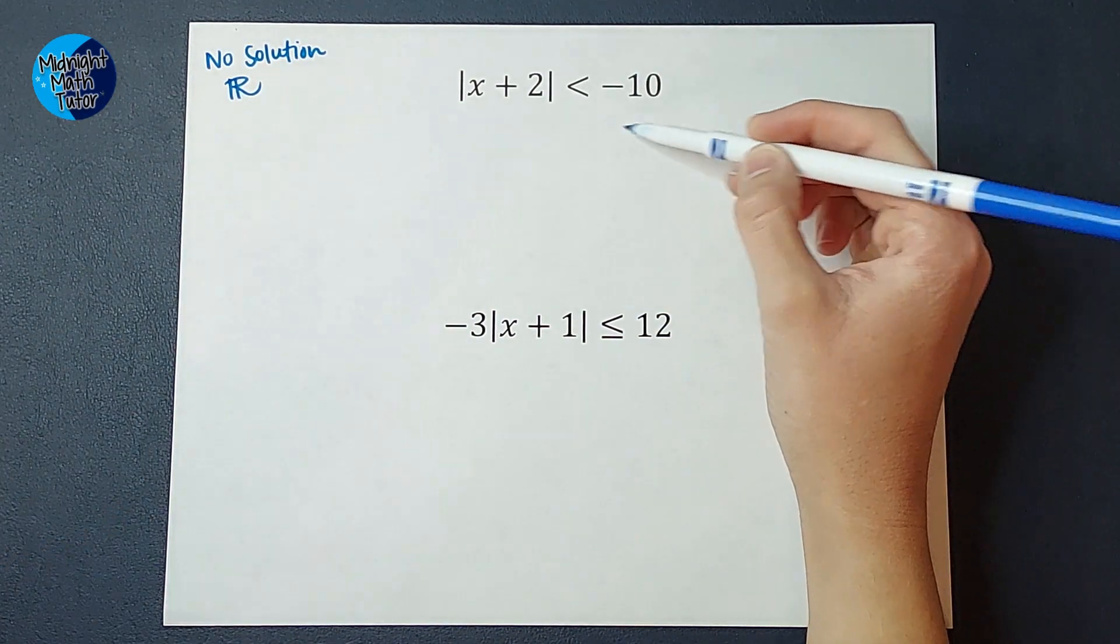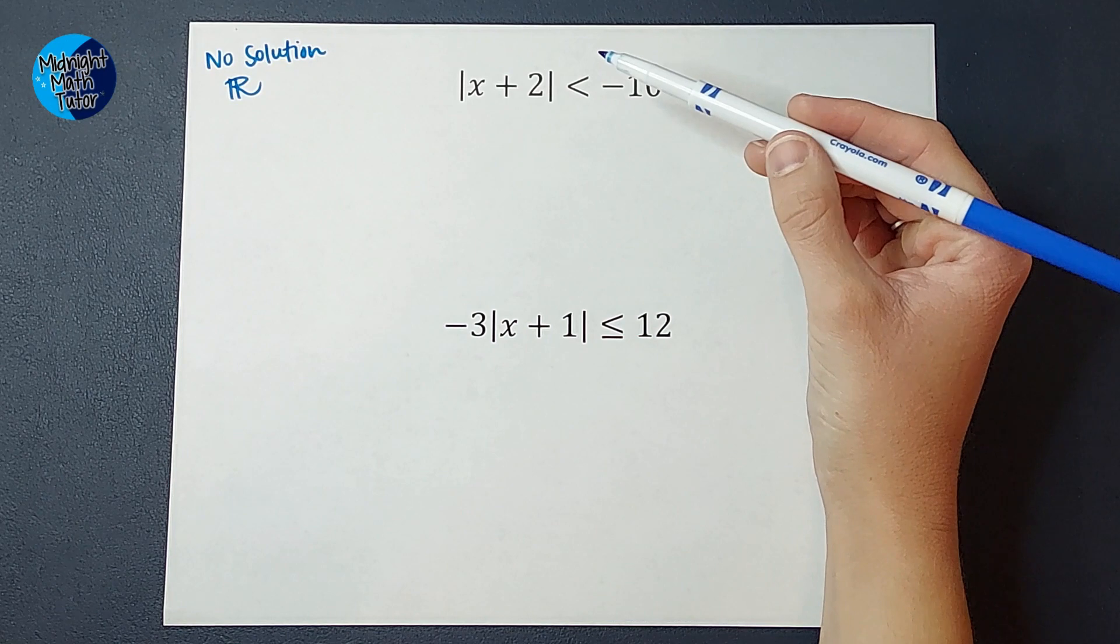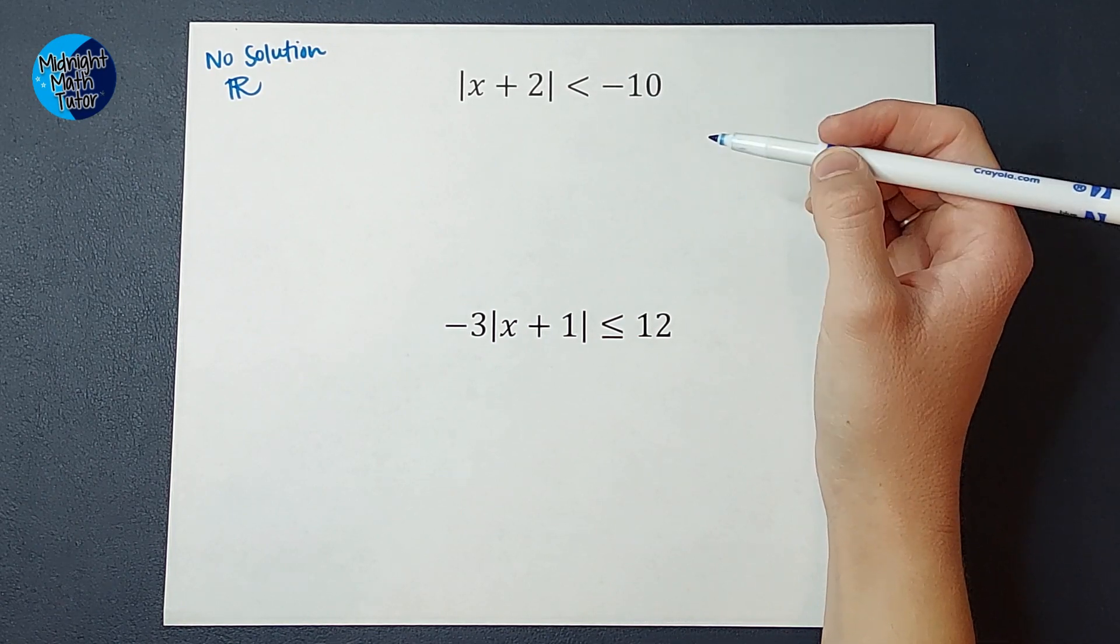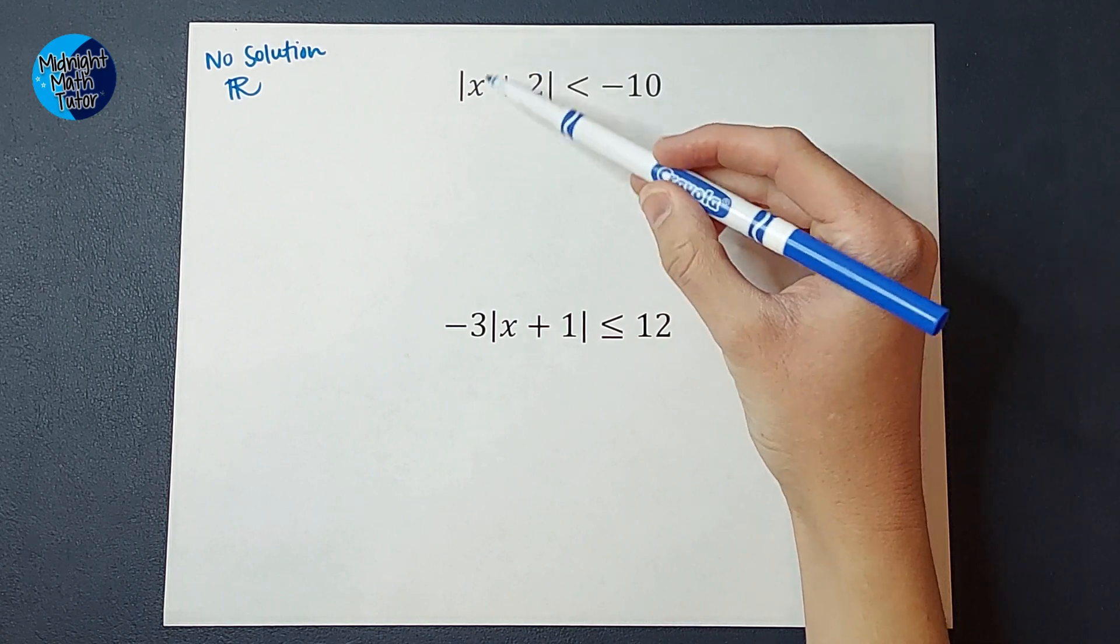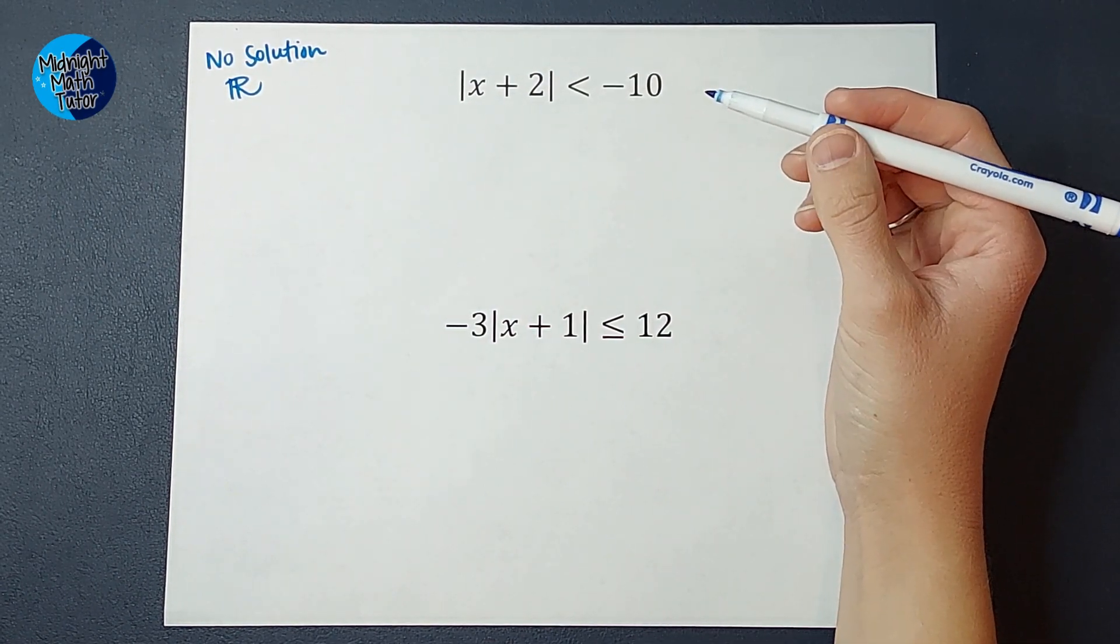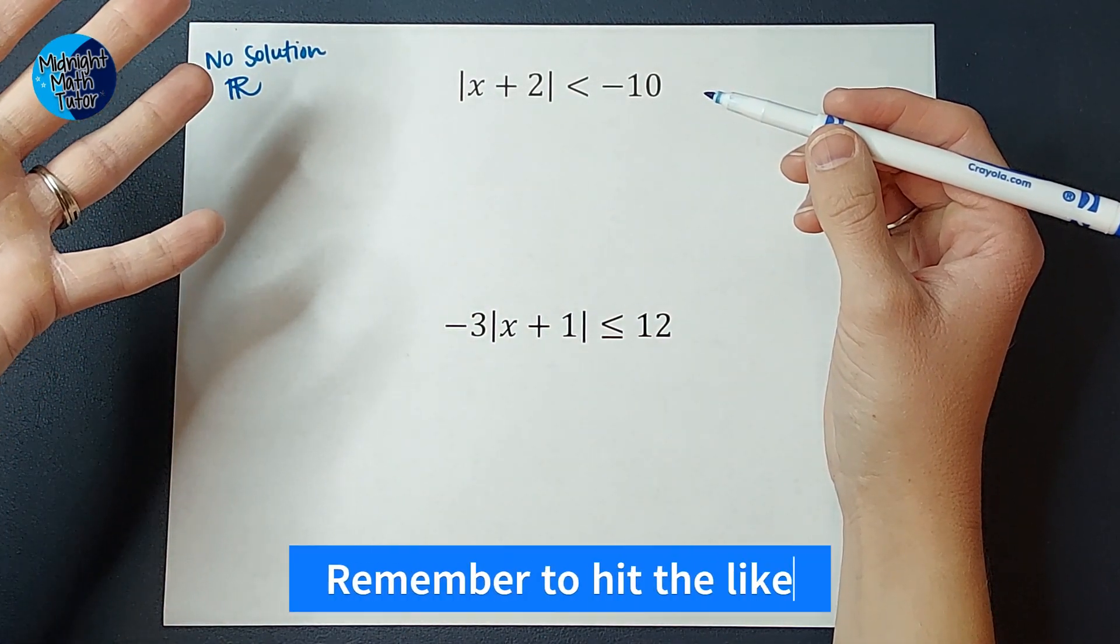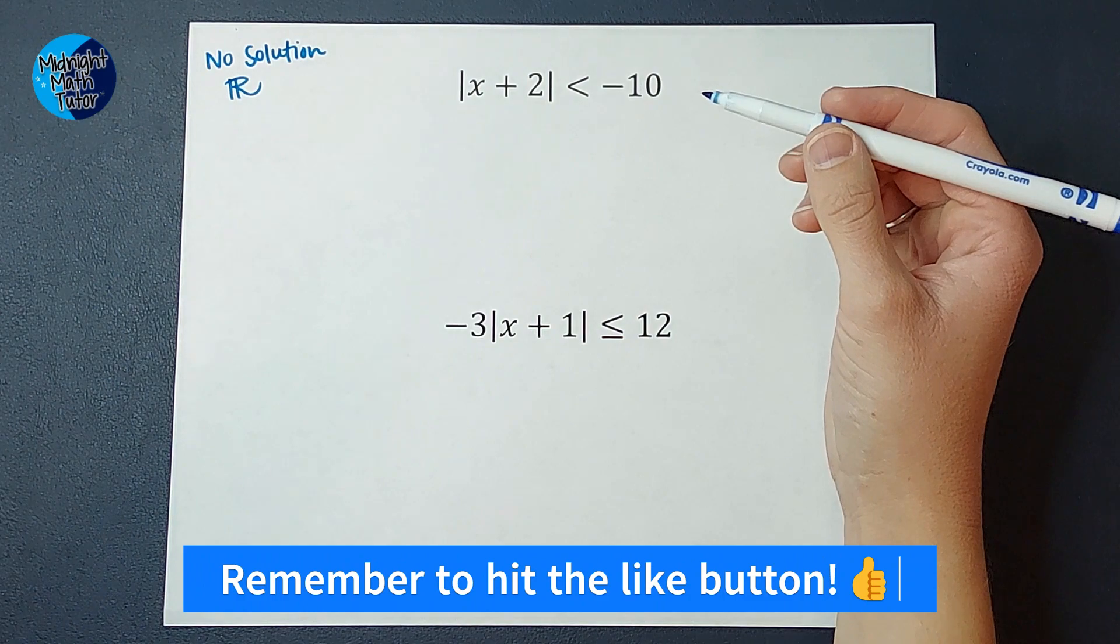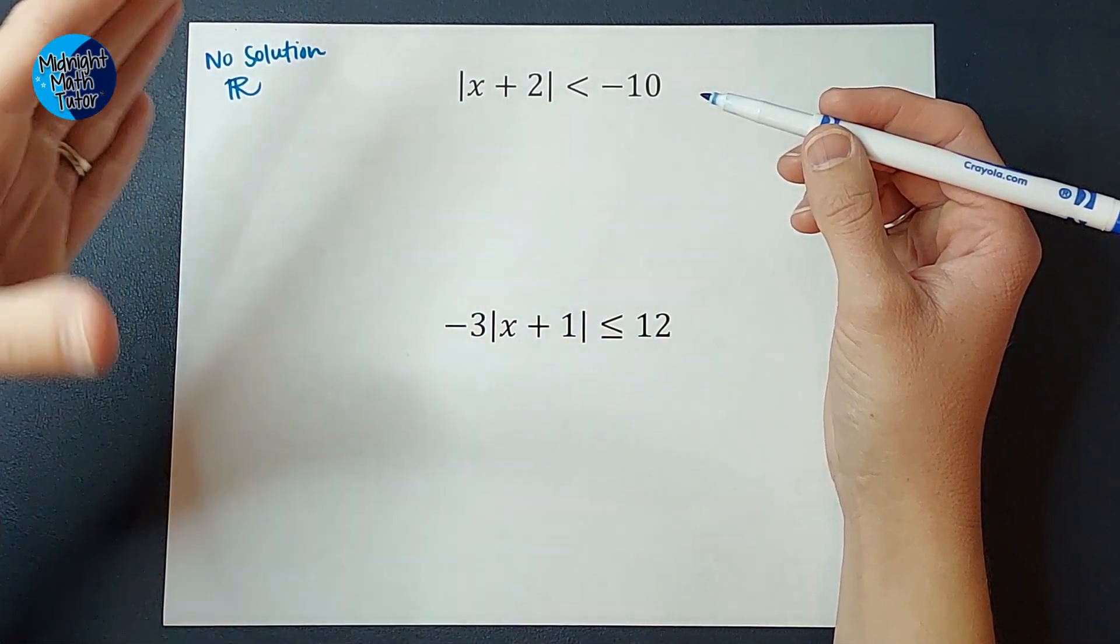When I'm looking at this, I have a negative 10. Now, if I remember what absolute value means, it's asking for a distance - how far is the number inside of here from zero? And we can't have a negative distance. You can't walk negative two miles. So the answer to an absolute value is always positive.